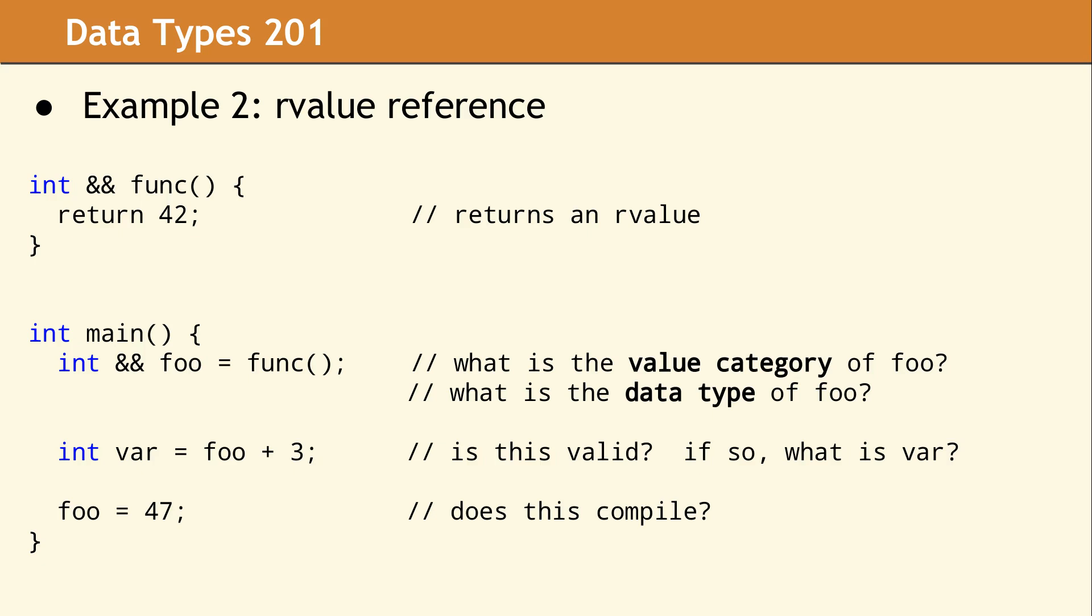Foo is declared as an R value reference, so that's the data type of foo. Since it has a name, its value category is L value. This is a point that can often be confusing when you're new to working with R value references. The fact that foo has the data type of R value reference, but its value category is L value, since it has a name. Down on the following line, when we compute foo plus 3, this is perfectly valid. Foo is an L value. It has the value 42. That's an integer. So we compute the value 45 and place it in var. Then on the last line of main, when we assign the value 47 to foo, this is perfectly valid. Foo is an L value, and its data type is R value reference to int, which means it acts exactly like the original int, so we can perfectly well assign to it.